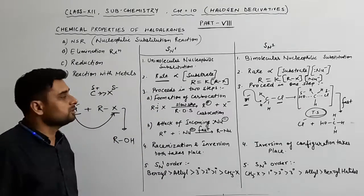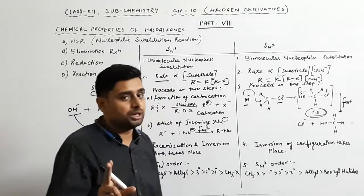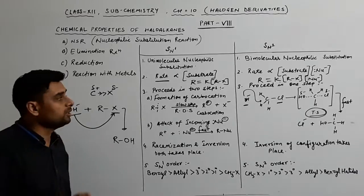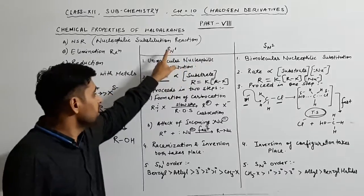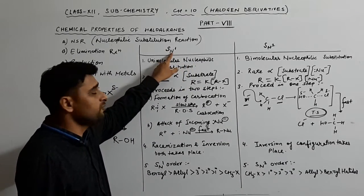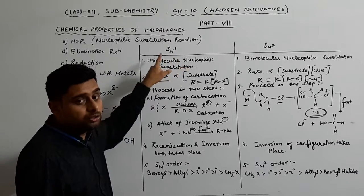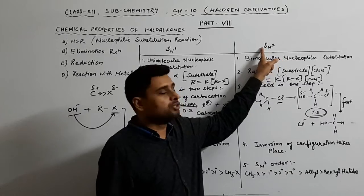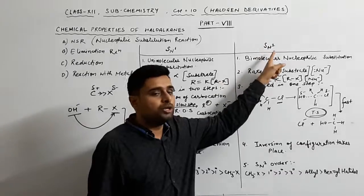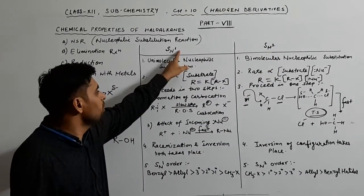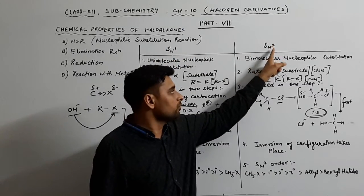Nucleophilic substitution reaction occurs in two ways: SN1 and SN2. In SN1, S stands for substitution, N for nucleophilic, and 1 for unimolecular. In SN2, S stands for substitution, N for nucleophilic, and 2 stands for bimolecular. SN1 is called unimolecular nucleophilic substitution reaction, and SN2 is called bimolecular nucleophilic substitution reaction.